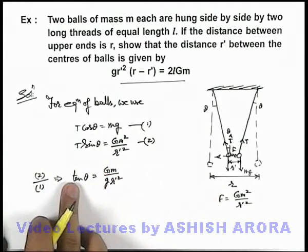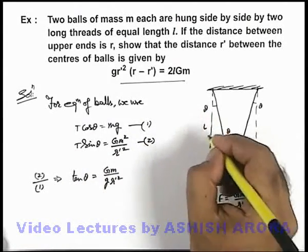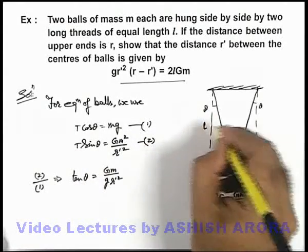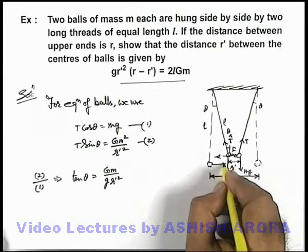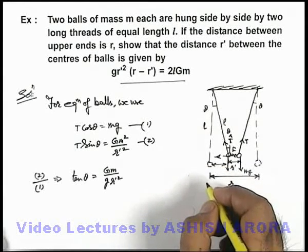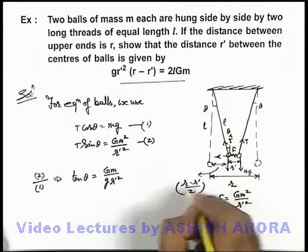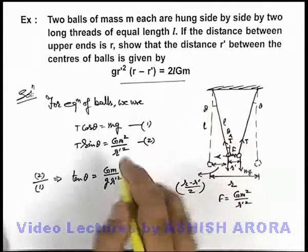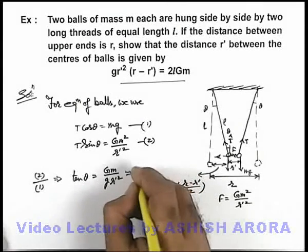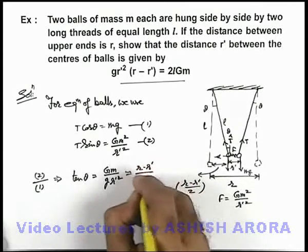If we just have a look on the value of tan theta, as the length of the thread given to us is l, and this separation we can simply write as (r - r')/2. So tan theta can be approximately written as this (r - r')/2l.